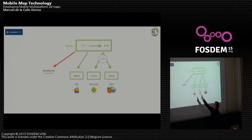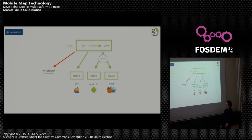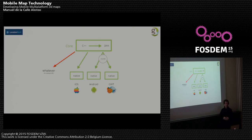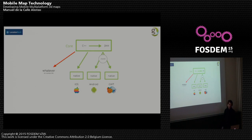The C++ code has abstract classes that allow us to connect new platforms. For example, we have a port for Windows 8 that is working — it's not completely finished currently, but we only have to compile the C++ in the Windows environment. In this way we can support any platform where C++ runs.